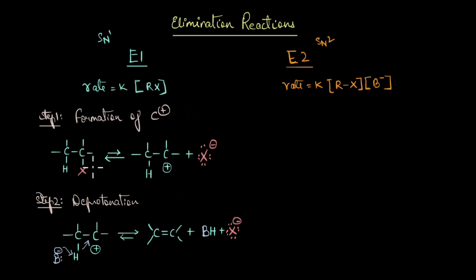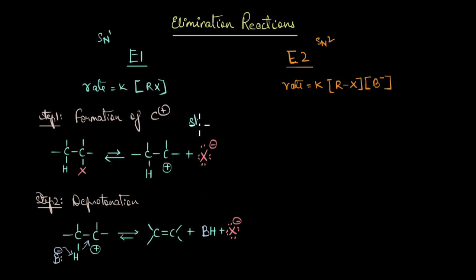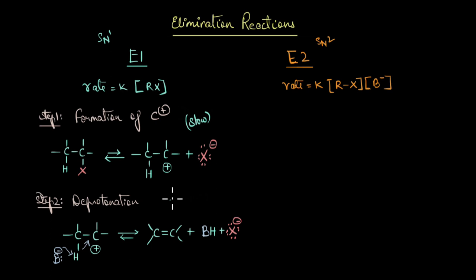Just like the SN1 reaction, the first step in an E1 reaction is the formation of a carbocation — a halogen atom leaves to form a carbocation. Because a reactive carbocation intermediate is formed, this is the rate-limiting step and the slowest step in the reaction. In the second step, deprotonation takes place such that the base abstracts the beta hydrogen and produces the alkene; this step is a fast one.